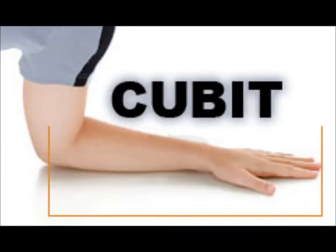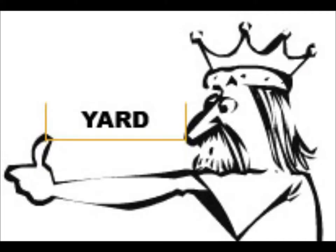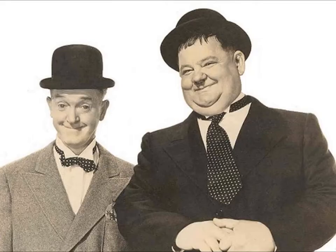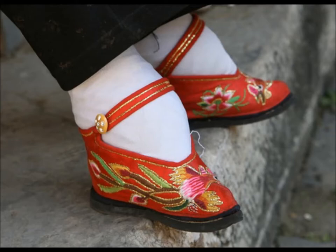Many of our units of measurement derive from the proportions of the human body. But this caused problems because not all bodies are the same. In fact, some people attempt to alter their proportions, such as elongating their necks or earlobes, or binding of their feet.